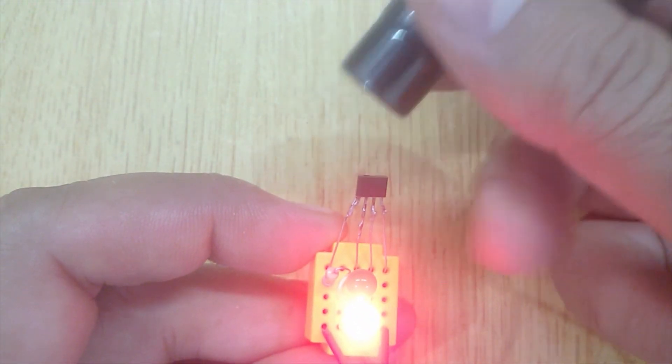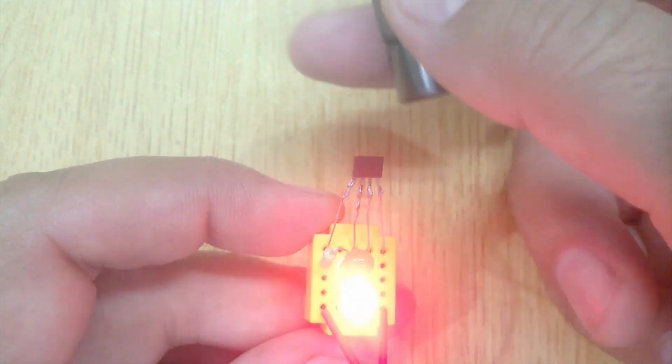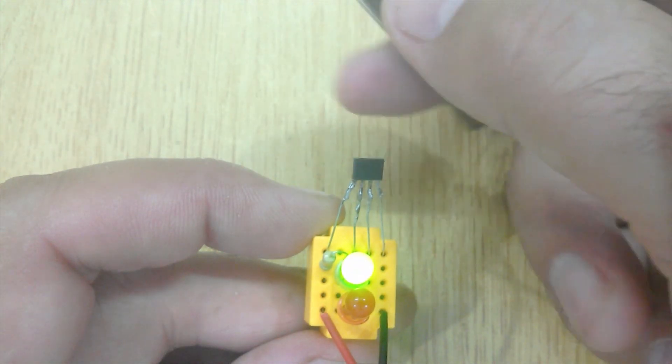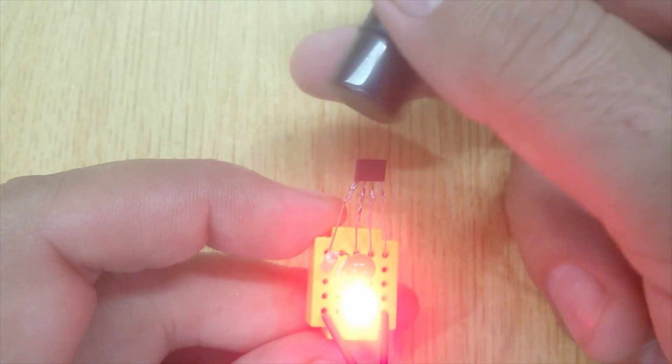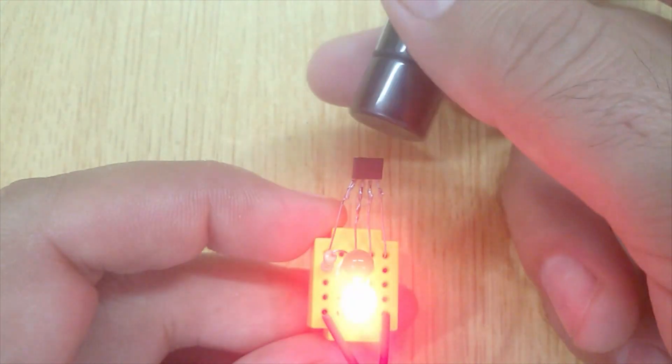You can see when I bring the north pole of the magnet near the hall effect sensor the red LED glows. And when I bring the south pole of the magnet near the hall effect sensor the green LED glows.